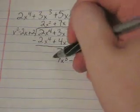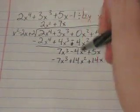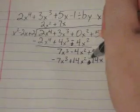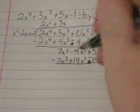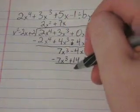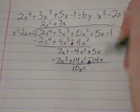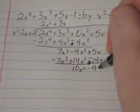And once again, you have to change the signs. So it will be minus, plus, minus. First terms cancel out. That's going to give you 10x squared. That's going to give you negative 9x.